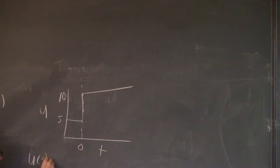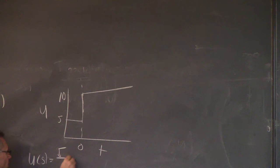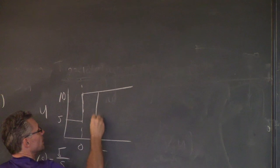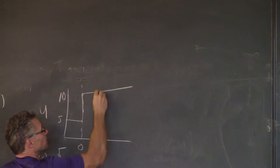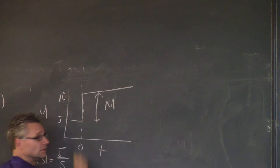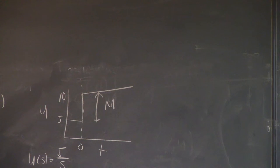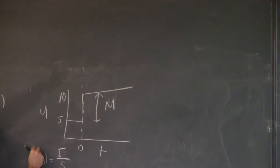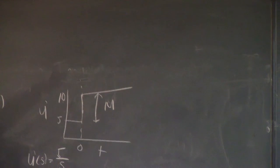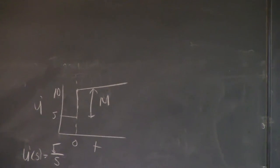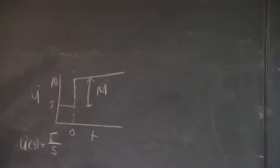Then U of s is 5 over s. The 5 is because that's the difference between where it starts and where it goes at the end. Again, it really should be U prime — it's a deviation variable. It starts at 5 and ends at 10, so the magnitude change is actually 5.